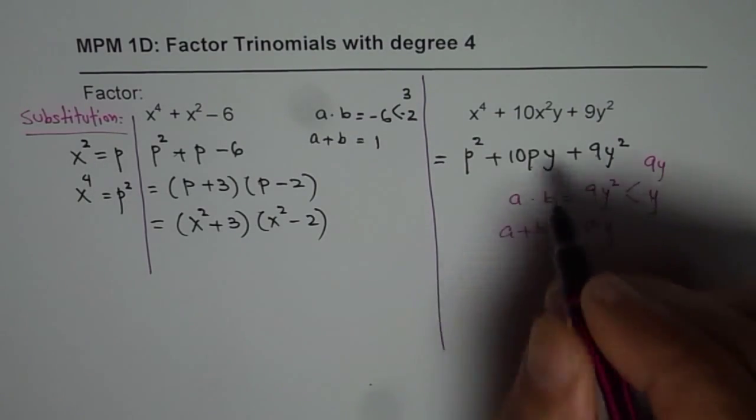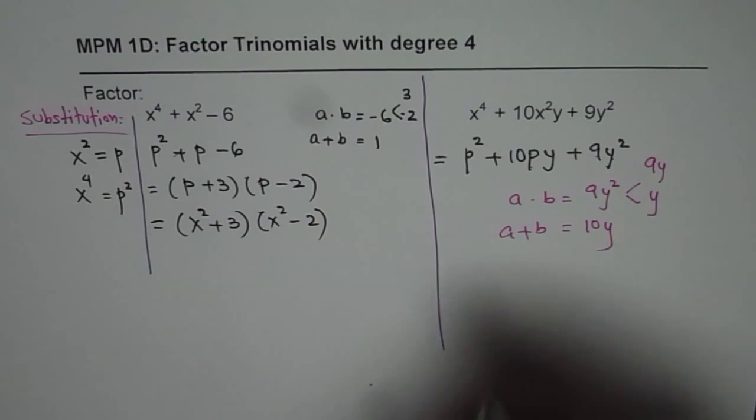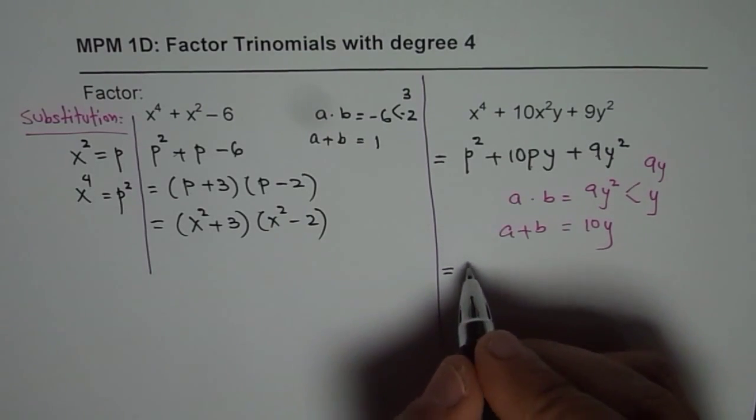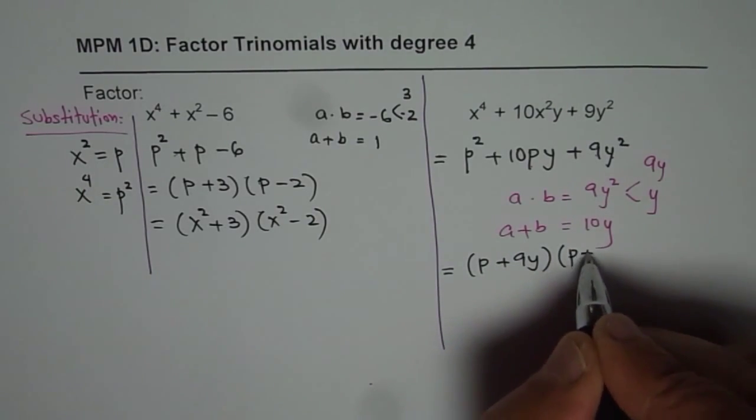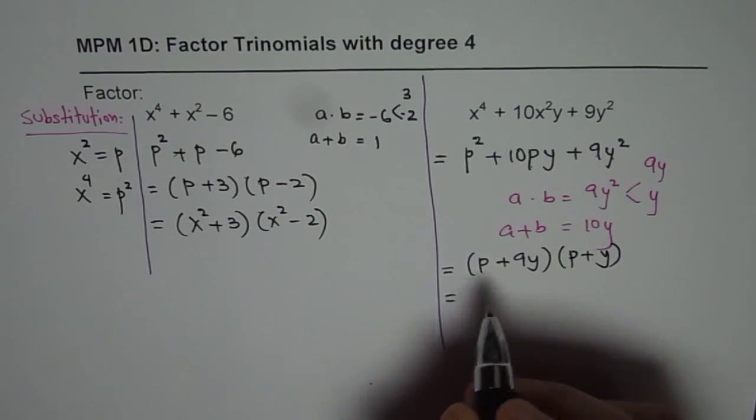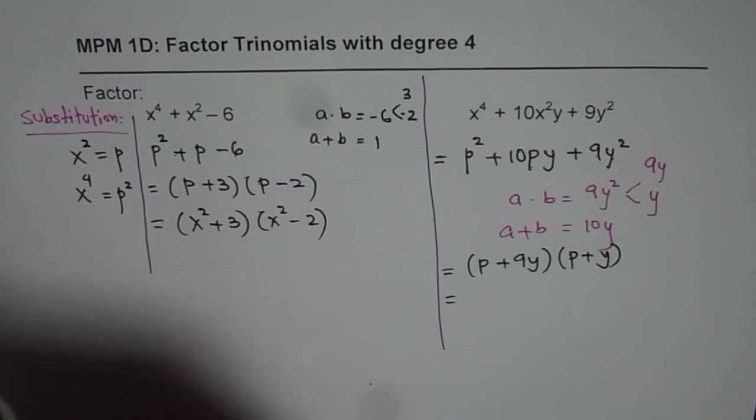So when you multiply, you get 9y², correct? So we can factor this as (p + 9y)(p + y). Now substitute back p as x².